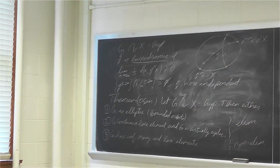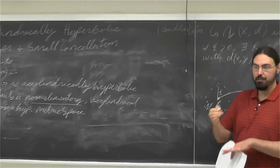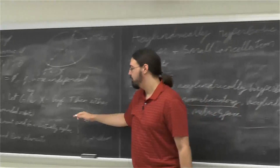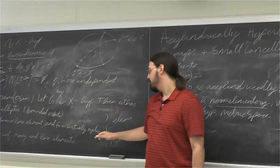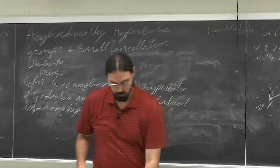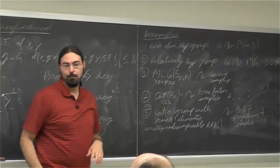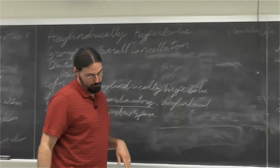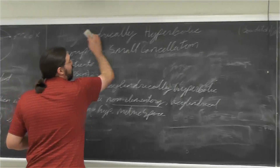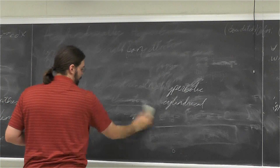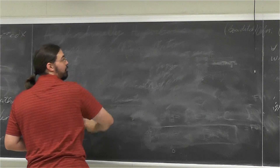As Ilya mentioned, if G acts acylindrically on a hyperbolic metric space, every subgroup also acts acylindrically. So if you have a subgroup of an acylindrically hyperbolic group, either it's elliptic with respect to that action, it's virtually cyclic, or it's itself acylindrically hyperbolic. In fact, you can also add non-elementary subgroups of hyperbolic groups here — they may not themselves be hyperbolic, but they still have a nice enough action on a hyperbolic metric space.